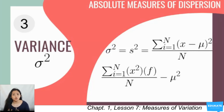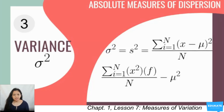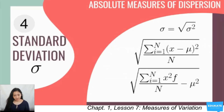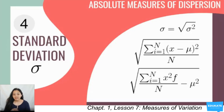Since we square the difference of each observation from the mean, the unit of measurement of the variance is the square of the unit used in measuring the observations. Such a property is problematic in interpretation — for example, 'points squared' or 'kilograms squared' is difficult to interpret. Because of that, we use the standard deviation.